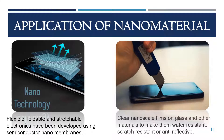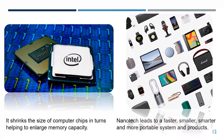Now let's look at the applications of nanomaterials. Flexible, bendable, foldable, and stretchable electronics have been developed using semiconductor nanomembranes — monocrystalline structures with thickness of less than a few hundred nanometers. These membranes also make materials water-resistant, scratch-resistant, or anti-reflective. Nanomaterials shrink the size of computer chips and help enlarge memory capacity. Nanotechnology leads to faster, smaller, smarter, and more portable systems and products.